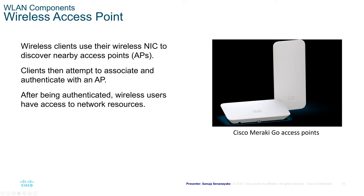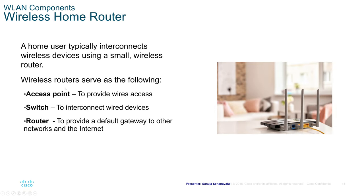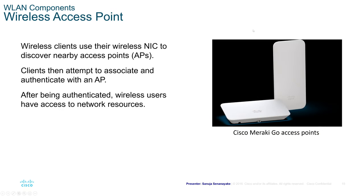The main point of an access point is to allow users to connect to the wireless network. In corporate environments, we don't typically have these types of combined wireless routers. Instead, we have a separate router, separate switches, and wireless access points deployed throughout the building providing coverage. Separating these components is easier to manage and allows scalability for an enterprise environment.